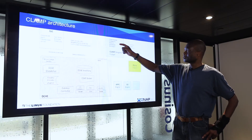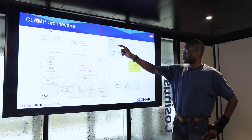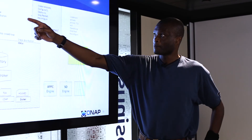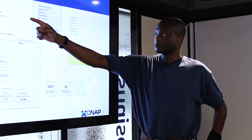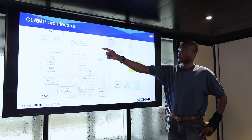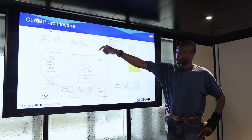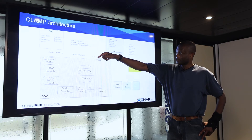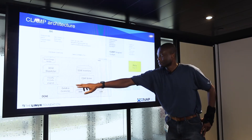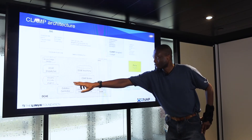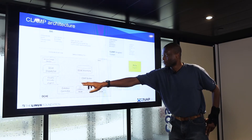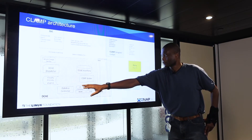It will distribute that created template to DCAE via SDC. So you push the configured template, which is called a blueprint — it's a Tosca template. SDC will distribute that blueprint to the DCAE controller, to be precise. That controller of DCAE will then have in its repository that control loop definition.